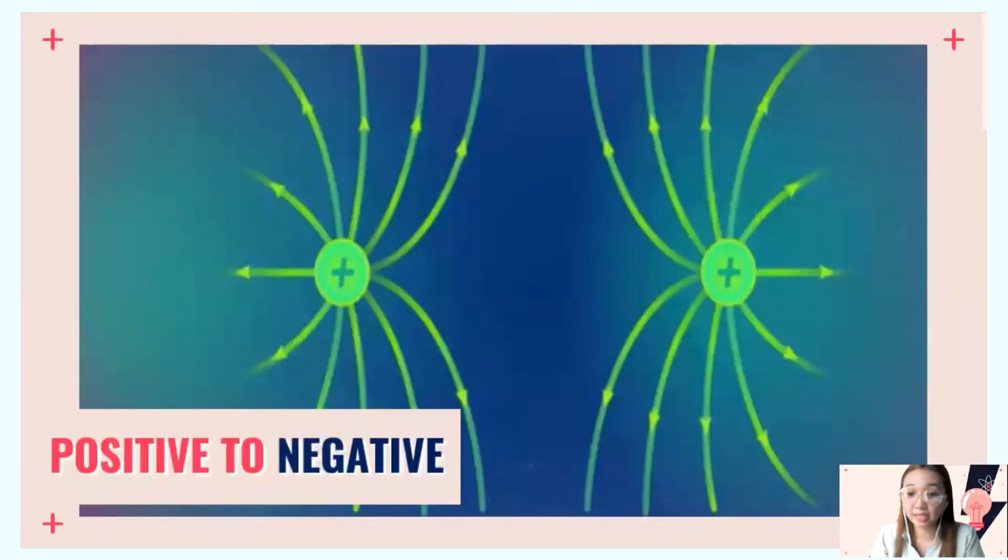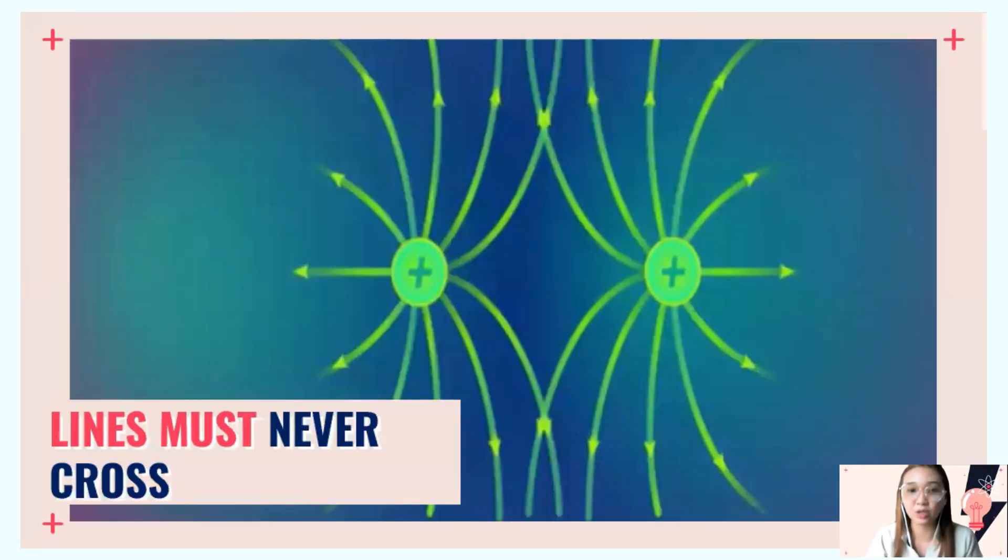The third reminder: positive to negative. Positive to negative means only opposite charges can create an electric dipole. Always positive to negative or negative to positive. Not like charges. Like charges—lines must never cross and intersect.